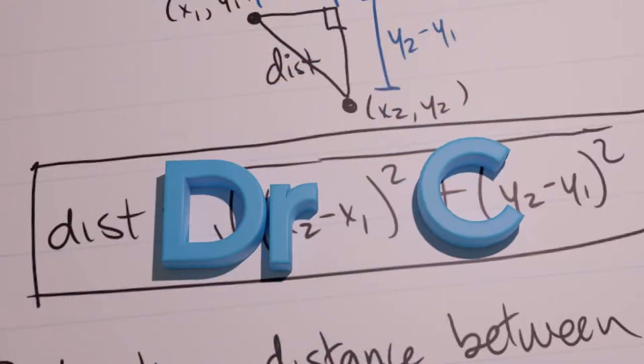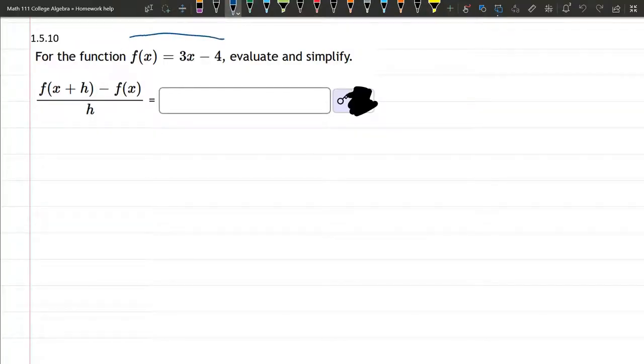This question we're simplifying a difference quotient. Our function is 3x minus 4. First thing I'm going to do is take x plus h and plug it in.